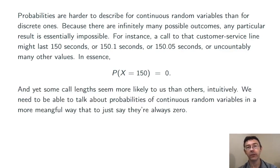Still, however, it seems like some call lengths are more likely than others. We expect a call that lasts 150 seconds to be a lot more likely than a call that lasts 3 hours, for instance. So, we need to be able to talk about probabilities for continuous random variables in a more meaningful way than to just say that the probabilities are always 0.